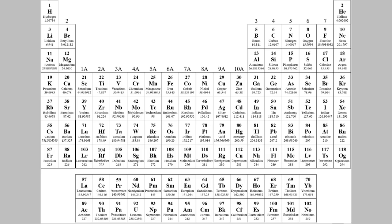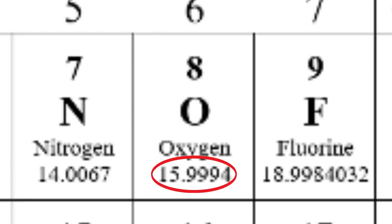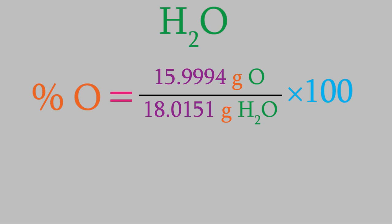If we look at the periodic table, we find out that oxygen weighs 15.9994 grams per mole. So that goes in our numerator. And we find out that a whole water molecule weighs 18.0151 grams per mole. When we perform the calculation, we find that the percent of oxygen in water is 88.8112%. Notice that I used the correct number of significant figures in my answer here. Don't forget to do that when you're answering questions on a test during the homework. It's worth points.